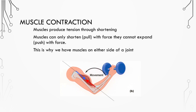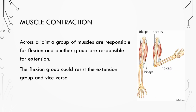Muscles produce tension through shortening. They can only shorten or pull — they cannot expand or push with any force. This is why we have muscles on either side of a joint. Across a joint, a group of muscles are responsible for flexion, and another group are responsible for extension. These muscle groups can work together to stabilize a joint, or the flexion group could resist the extension group, and vice versa.